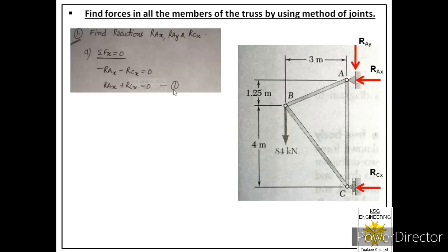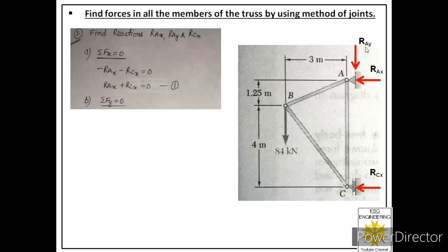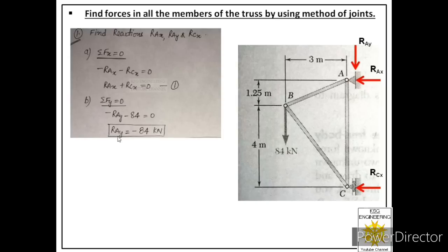Applying ΣFy = 0: there are only two forces acting in the vertical direction — the external force 84 kN and reaction RAY — both acting downward. So the equation becomes: −RAY − 84 = 0, giving RAY = −84 kN.